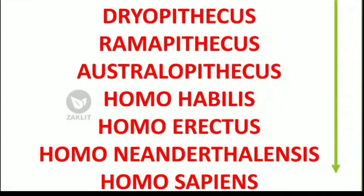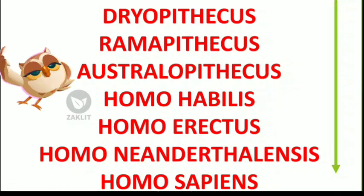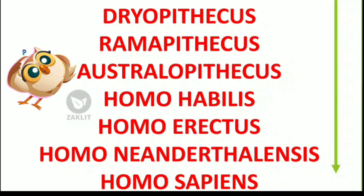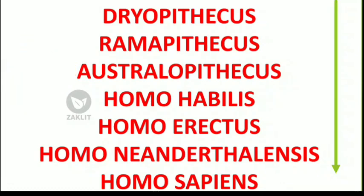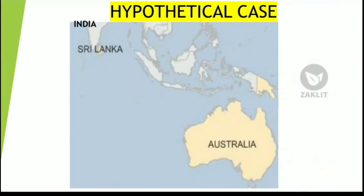Humans have evolved through different phases, and these are the correct chronological order for the evolution of humans, starting from Dryopithecus to Homo sapiens. Names like Ramapithecus and Australopithecus are very difficult to remember, but these are very frequently asked questions in entrance examinations, so we will learn how to remember them.